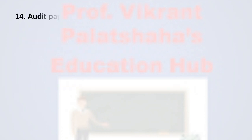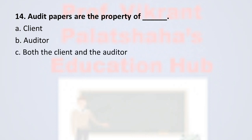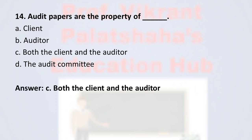Question number fourteen: audit papers are the property of — option A client, option B auditor, option C both the client and the auditor, and option D the audit committee. The correct option is option C, both the client and the auditor.